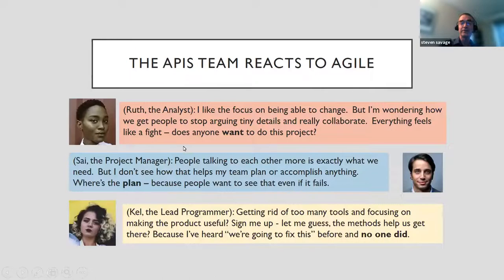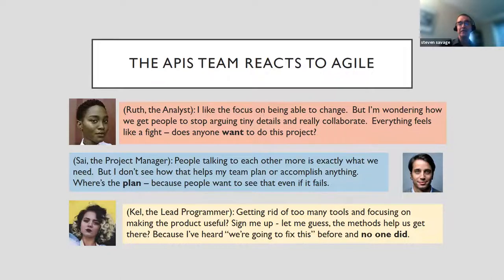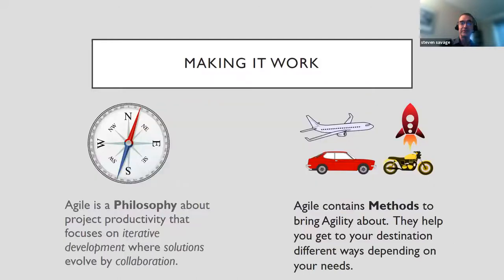Our imaginary team APIS is informed about Agile and gives their feedback. Ruth the analyst likes to focus on change, but wonders how do you keep people from arguing. Cy the project manager loves the idea of people talking more, but asks how does it make a plan. And Kel the lead programmer has heard it all before — 'we're going to fix it.' With these three people dealing with a project on fire, let's get a little bit more about how Agile works.